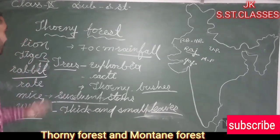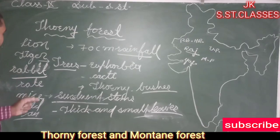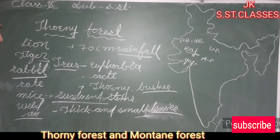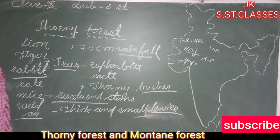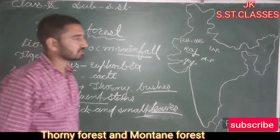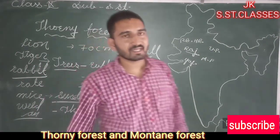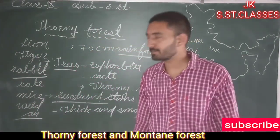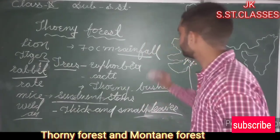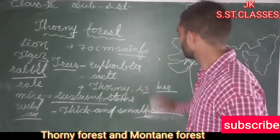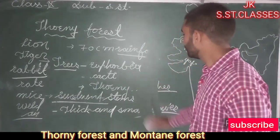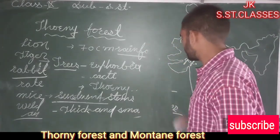Major animals of thorny forests are lion, tiger, rabbit, wild boar, mice, and wild ass. The next category of forests is the mountain forest.